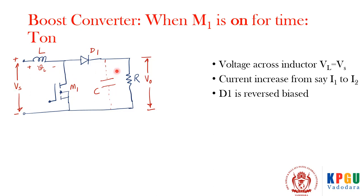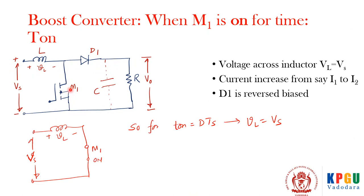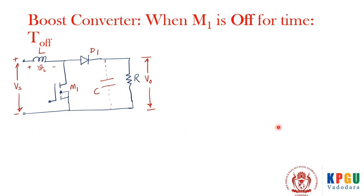This switching operation has been taking place for a very long time and we are discussing what happens in ton time and toff time in steady state. When the switch is turned on, there is no positive voltage at the diode anode side, so it is reverse biased and the diode circuit is disconnected. The equivalent circuit during switch-on shows that Vs is directly available across the inductor, so for d·Ts (the on time), the voltage across the inductor is Vs.